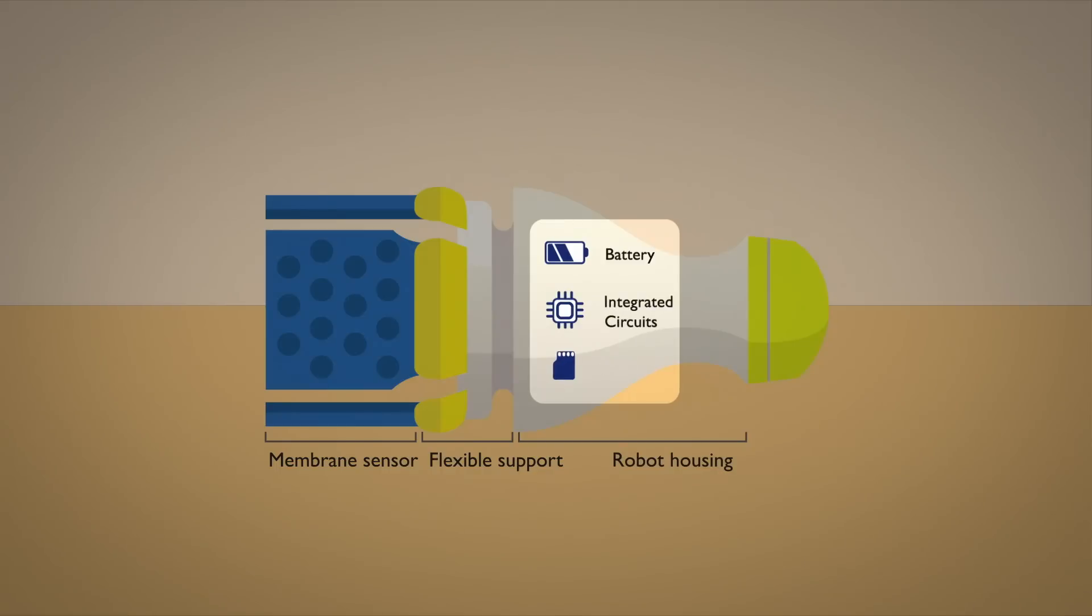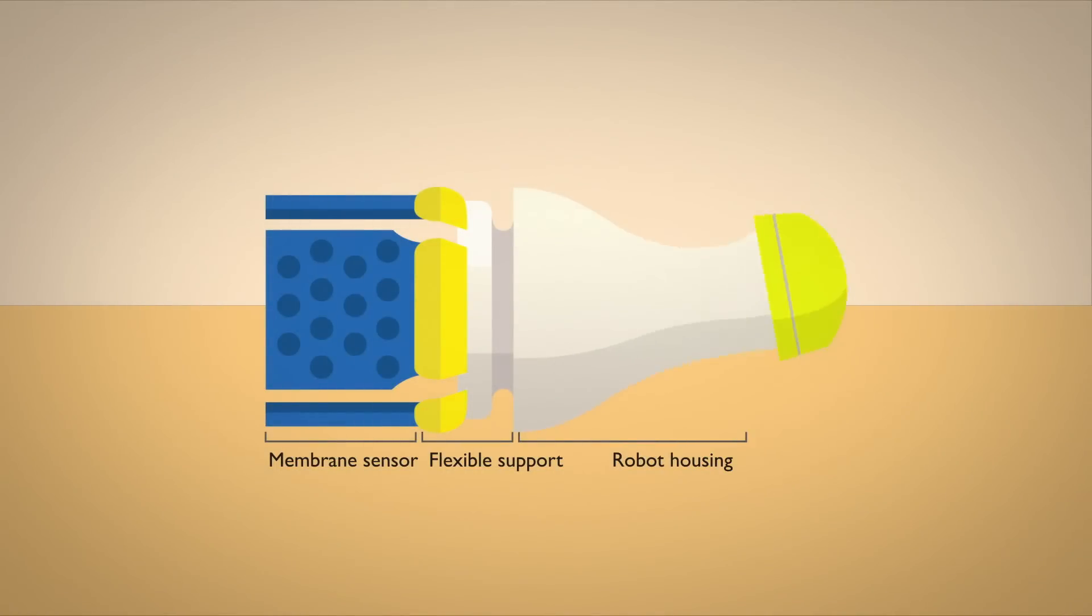The robot housing contains the electronics to make the robot wireless. The housing is made of soft rubber so it can bend to go around the pipe elbows.